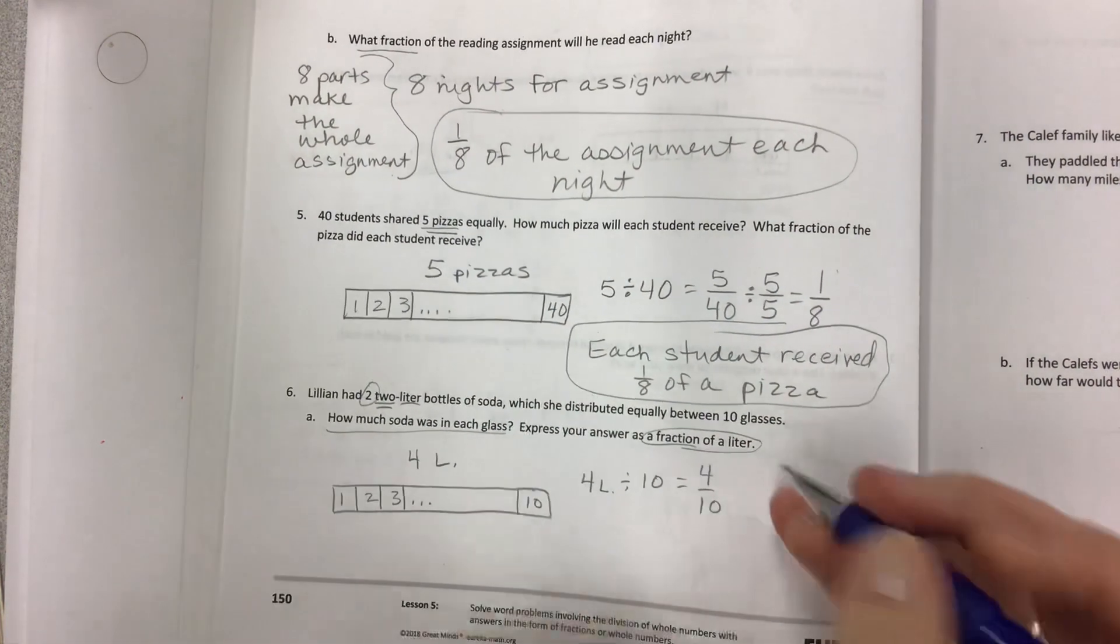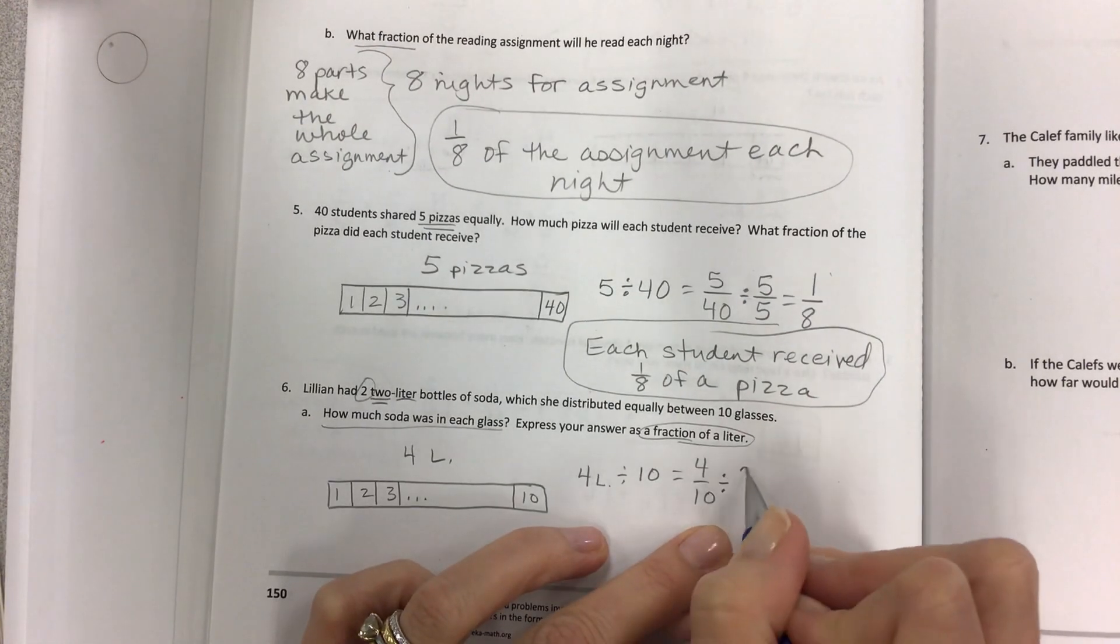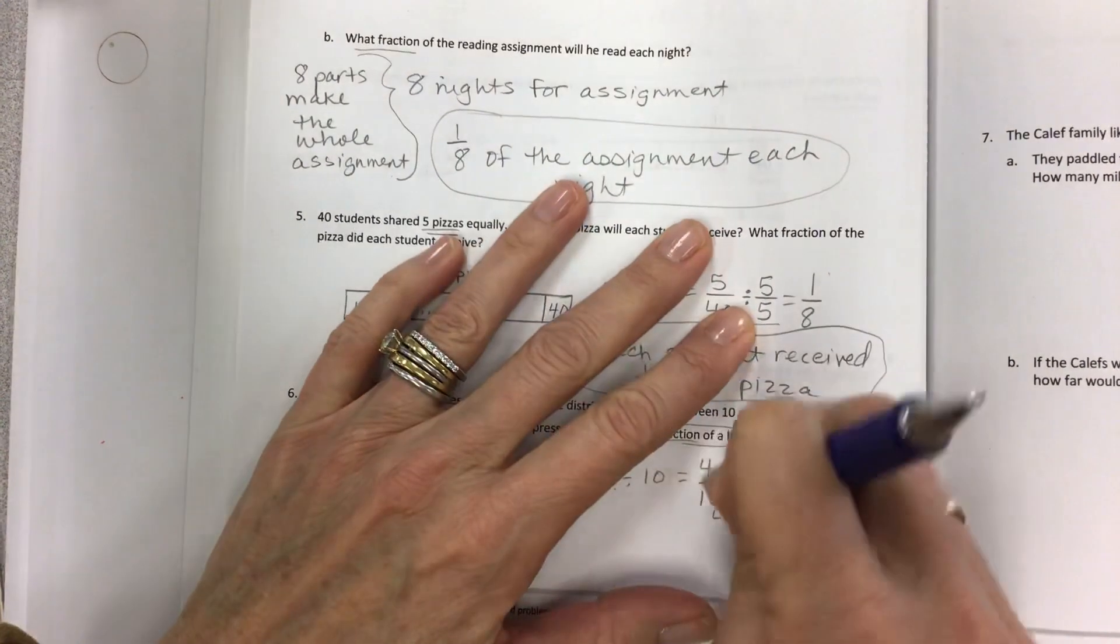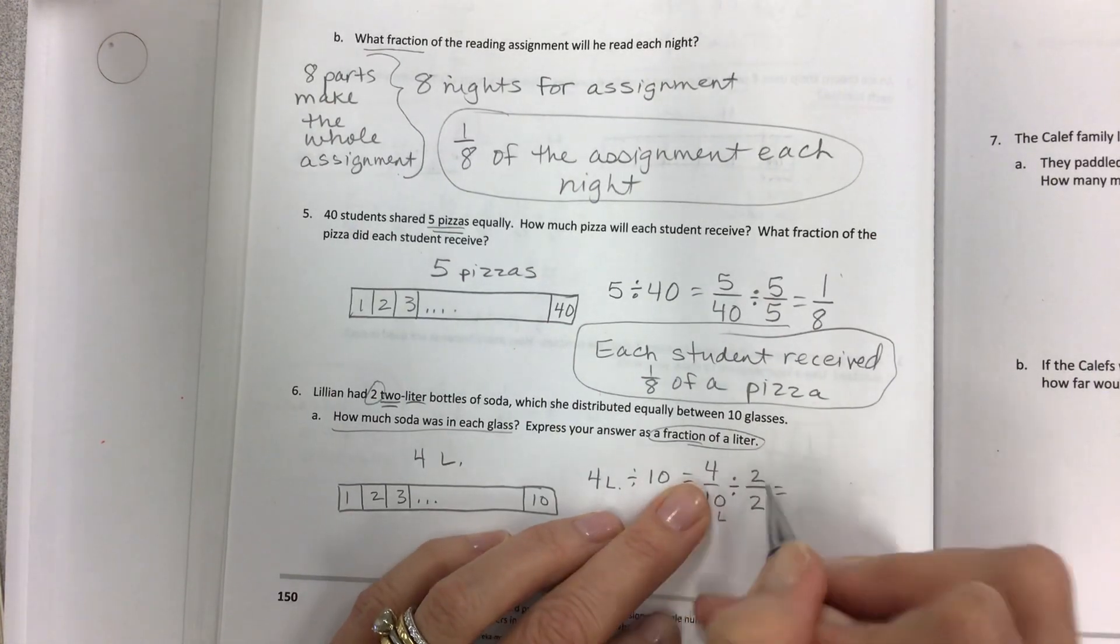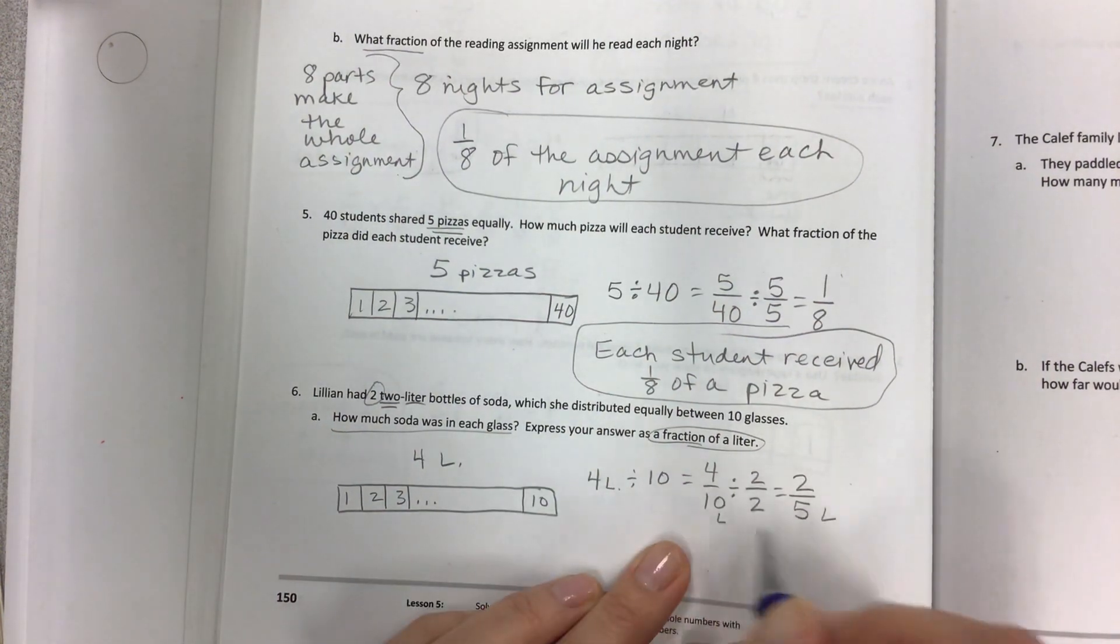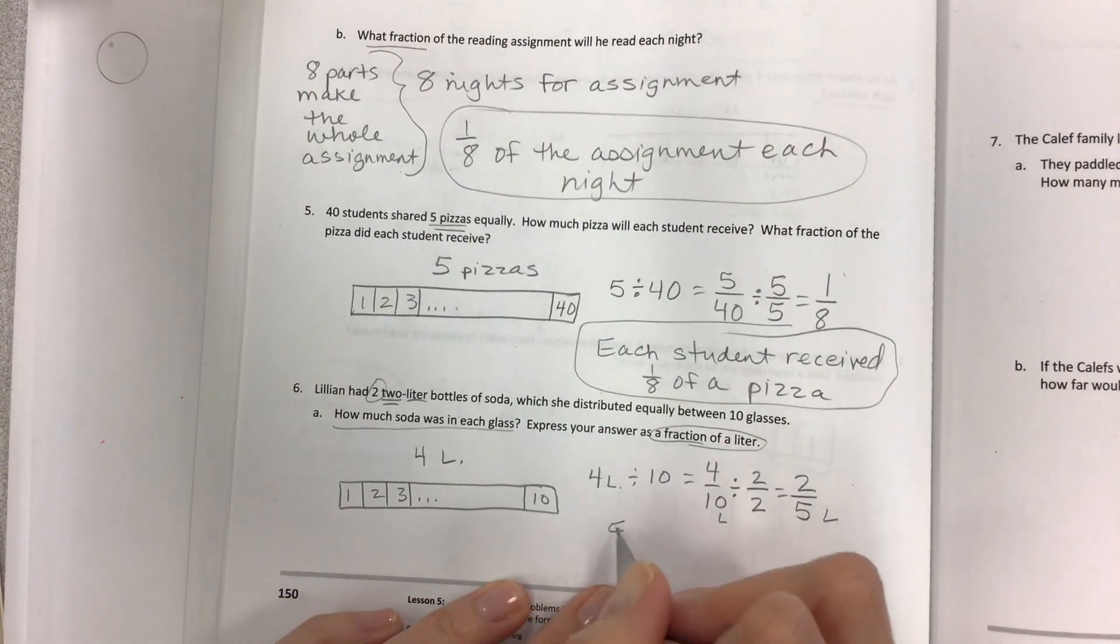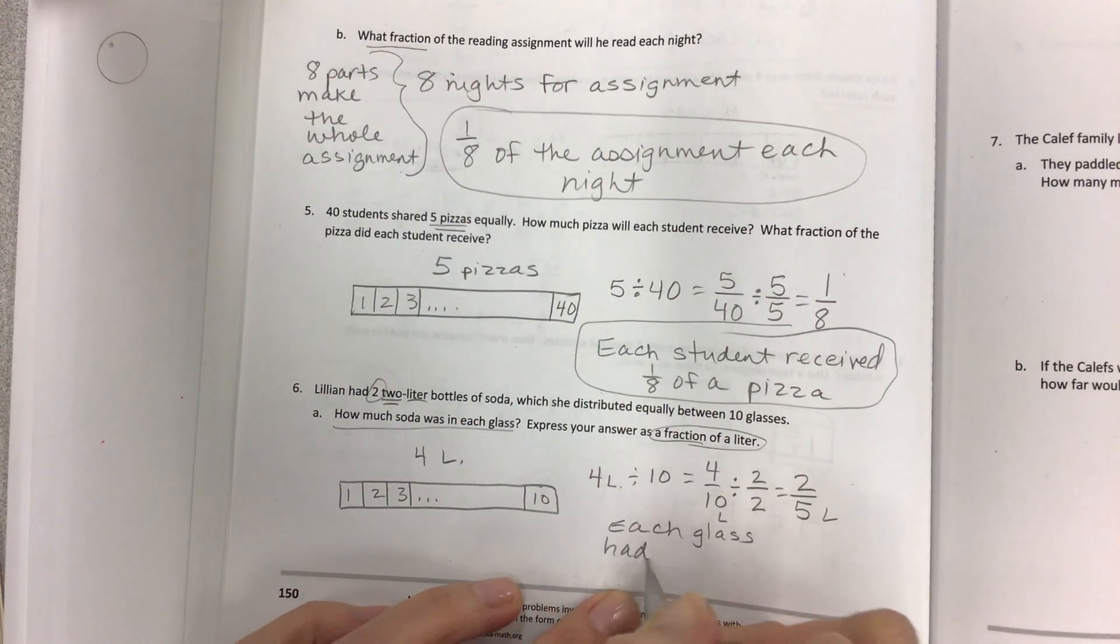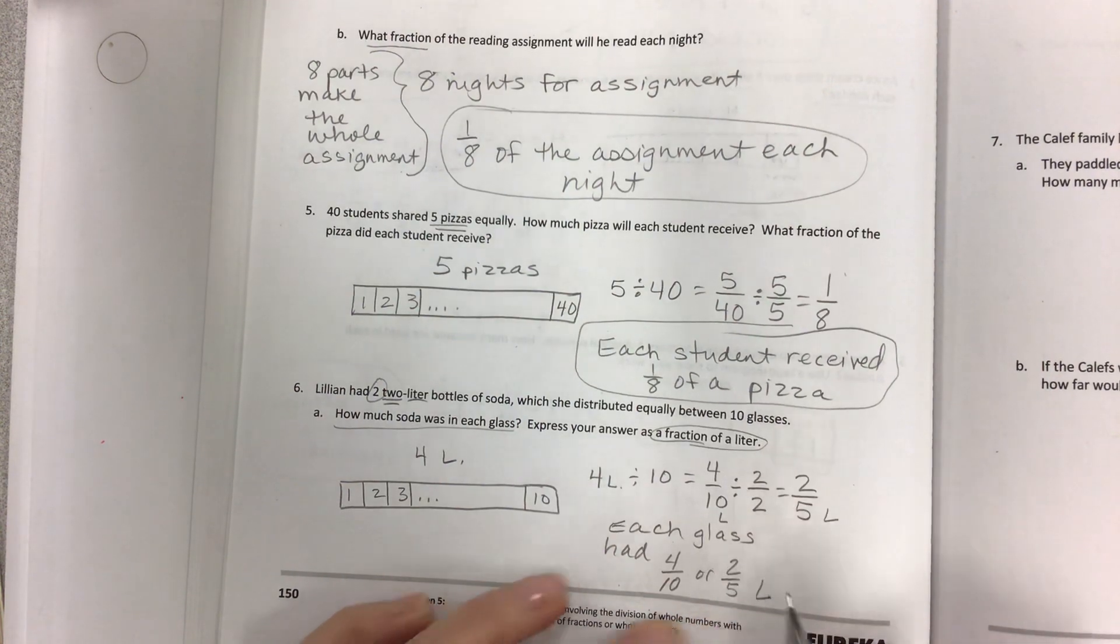Four liters divided by 10 is equal to 4/10. Now that is also able to be simplified because I can find a common divisor. You can leave it like this. This is fine. Or two halves. And then 4 divided by 2 is 2, and 10 divided by 2 is 5. So this is the same. So this is our answer as a fraction of a liter. Each glass has 4/10 or 2/5 liter.